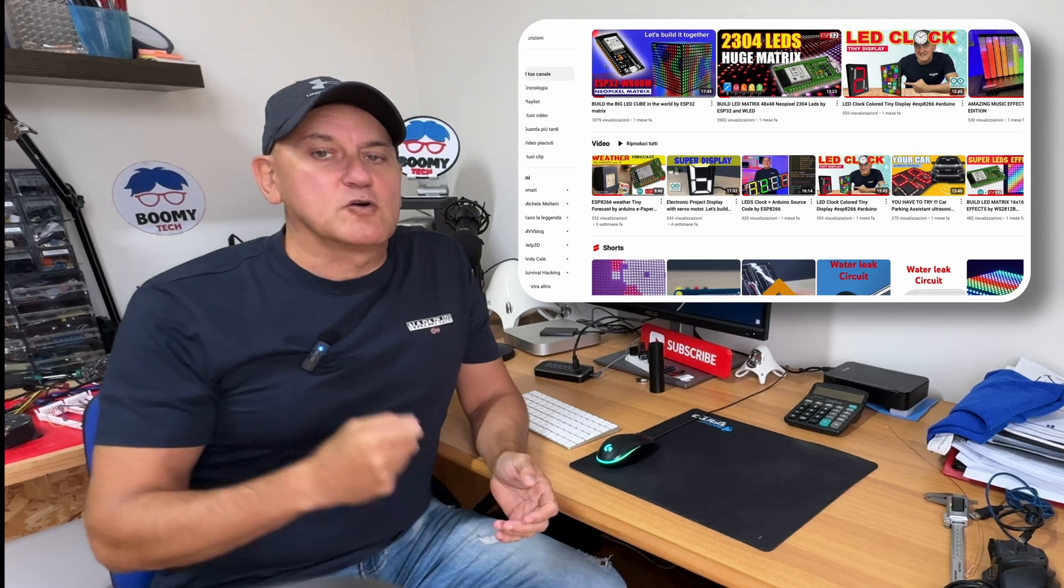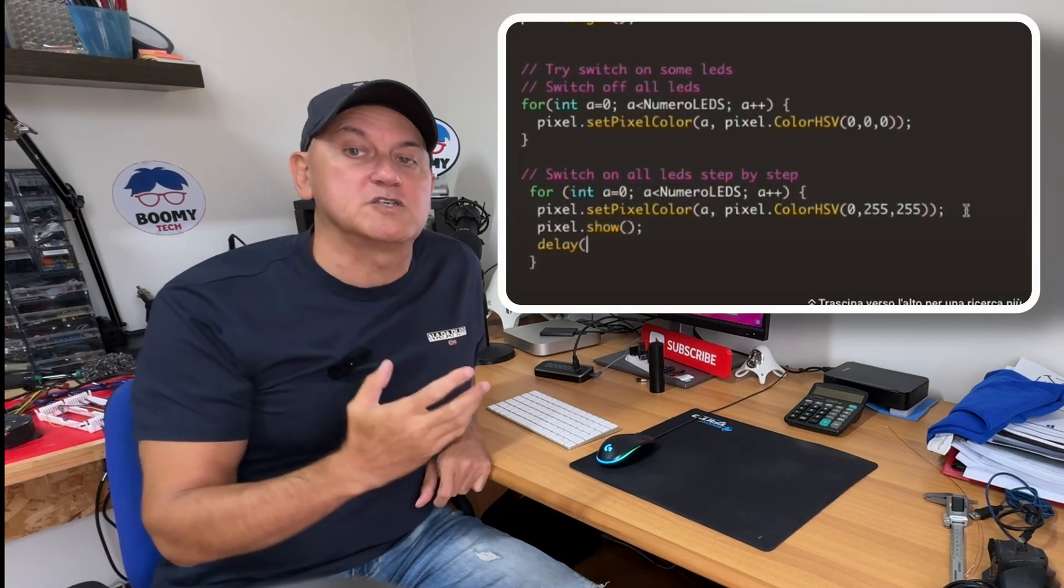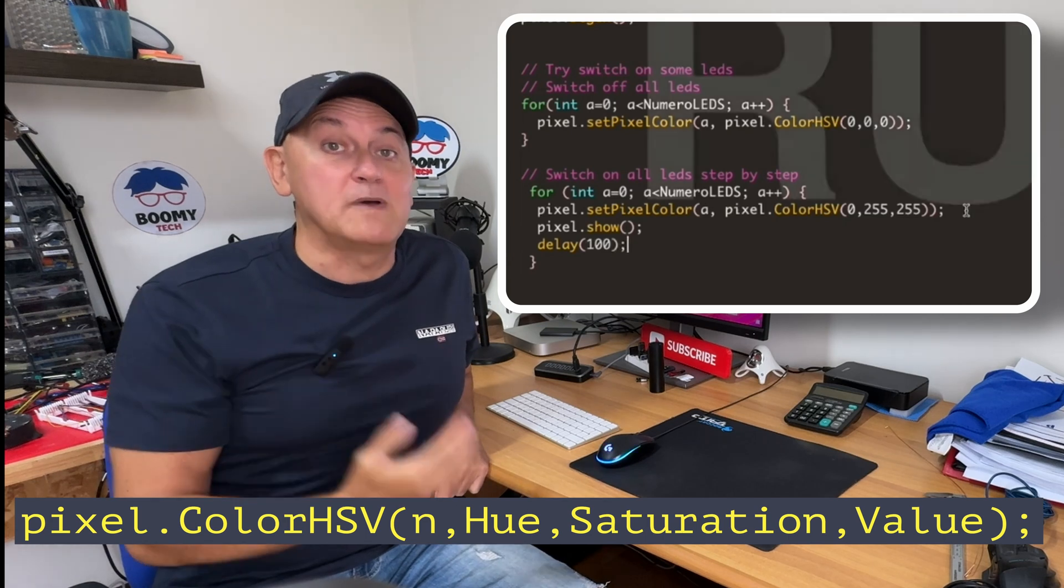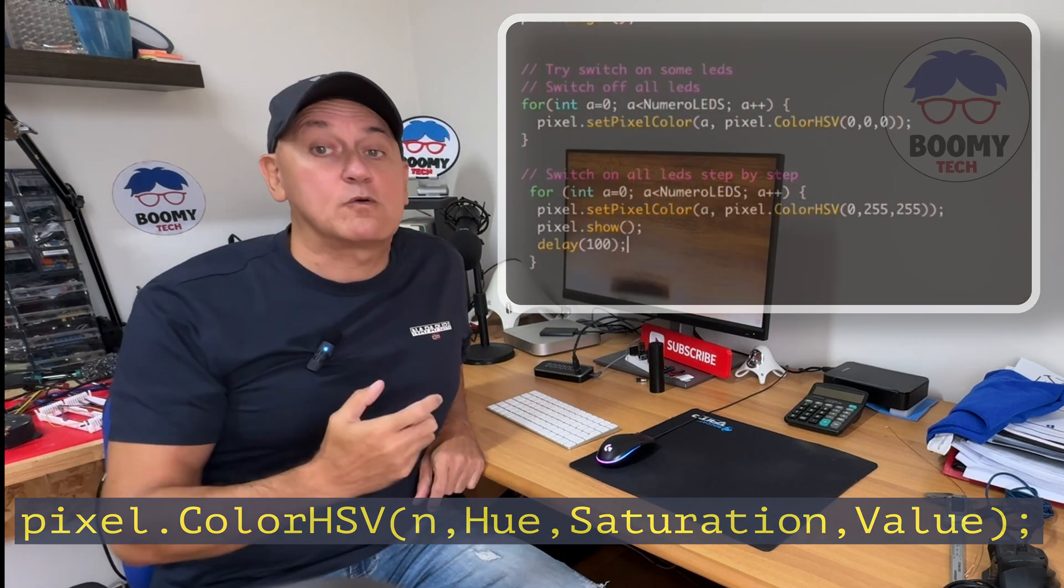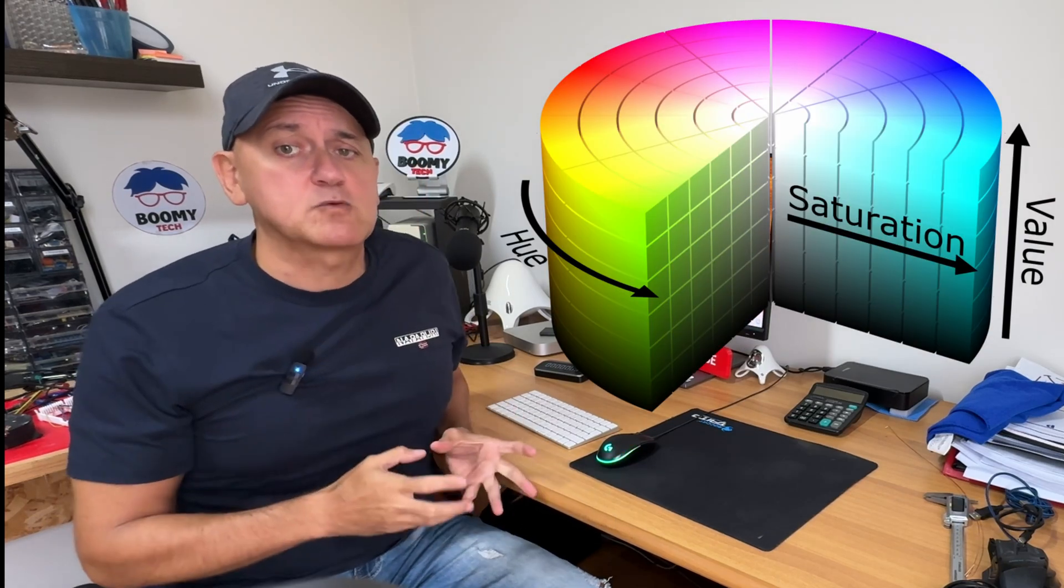Today in this video I would like to explain to you how the coloring of RGB LEDs works. In many videos you have seen me using RGB LEDs to make displays, colored cubes, bright clocks, and much more. But do you know how to set the color of RGB LEDs in Arduino using the HSV methodology? In this video I want to show you how the HSV color system works by making a quick circuit with a breadboard and LED strips.